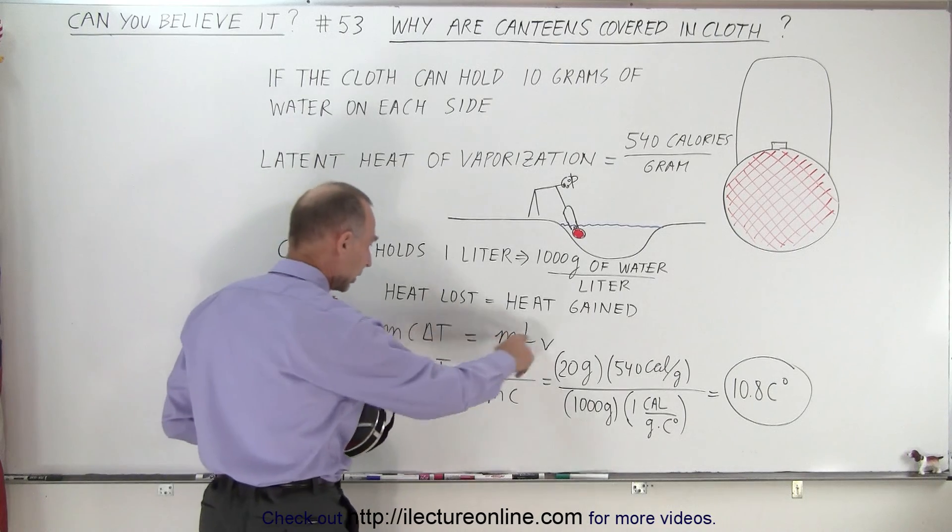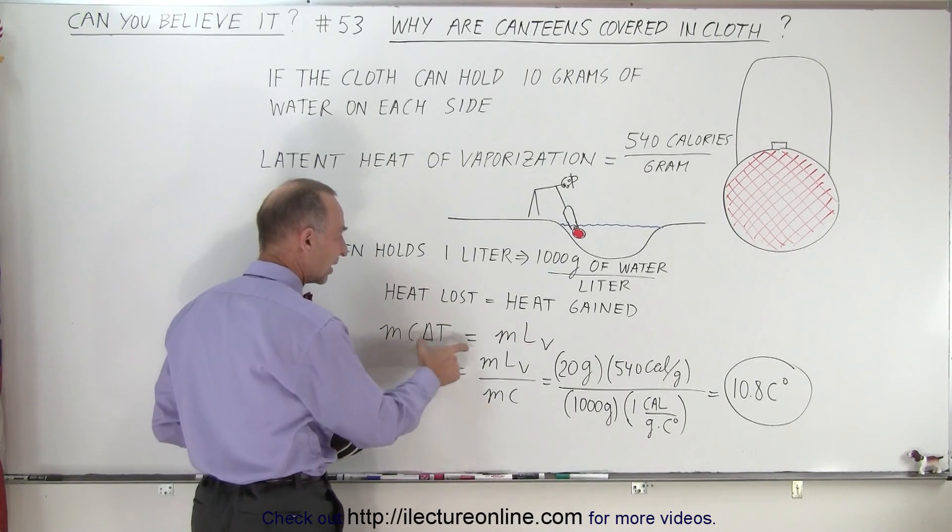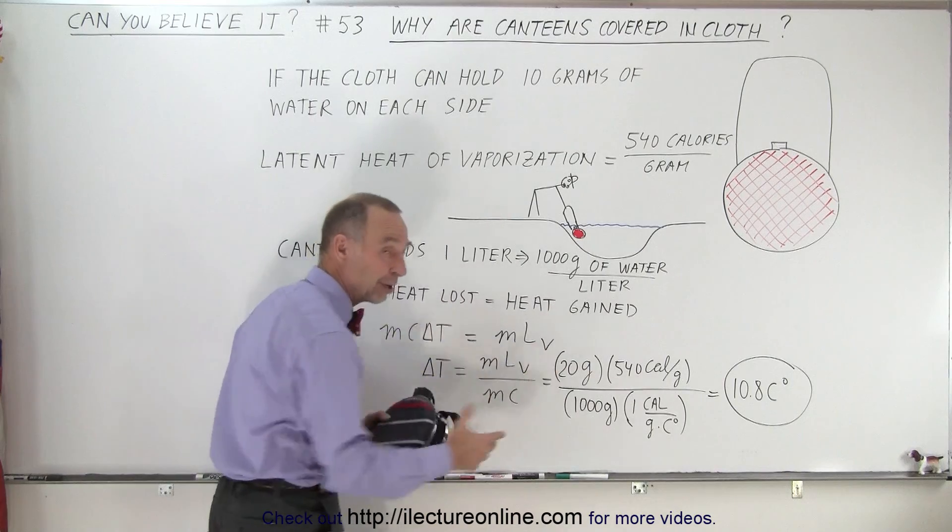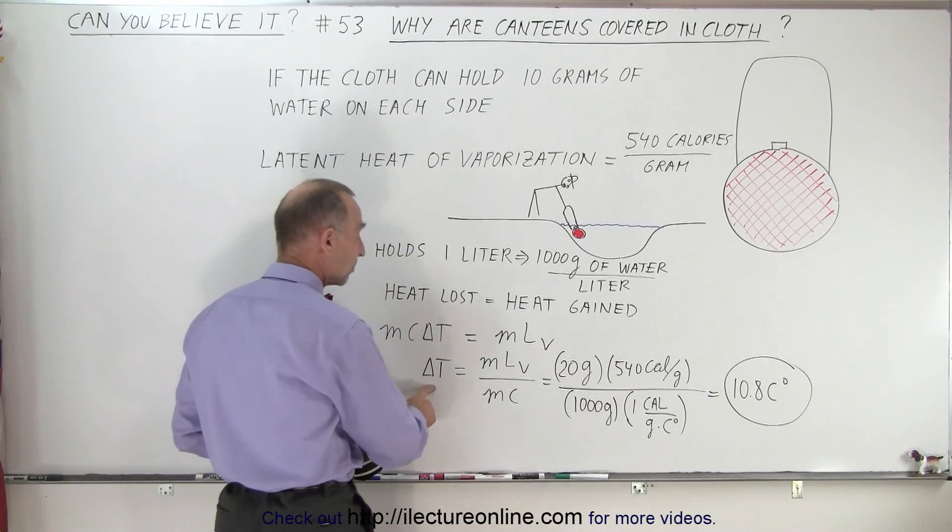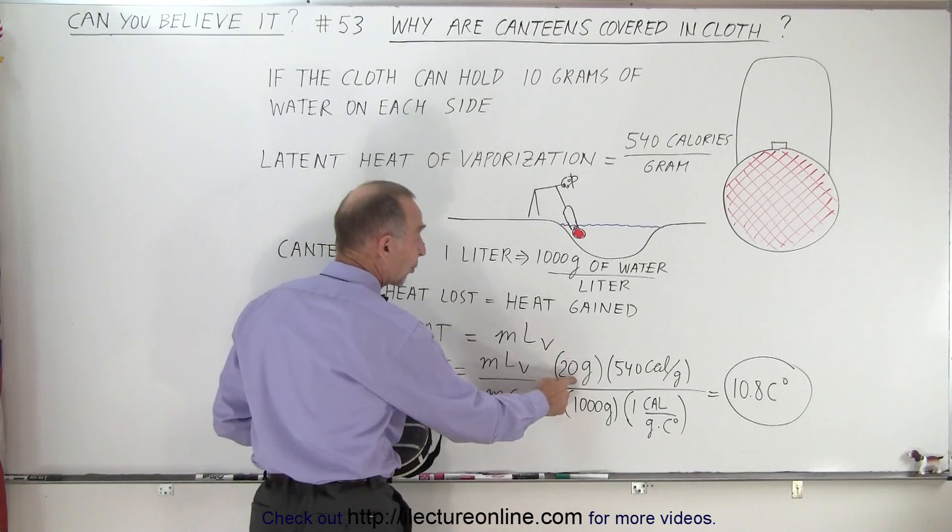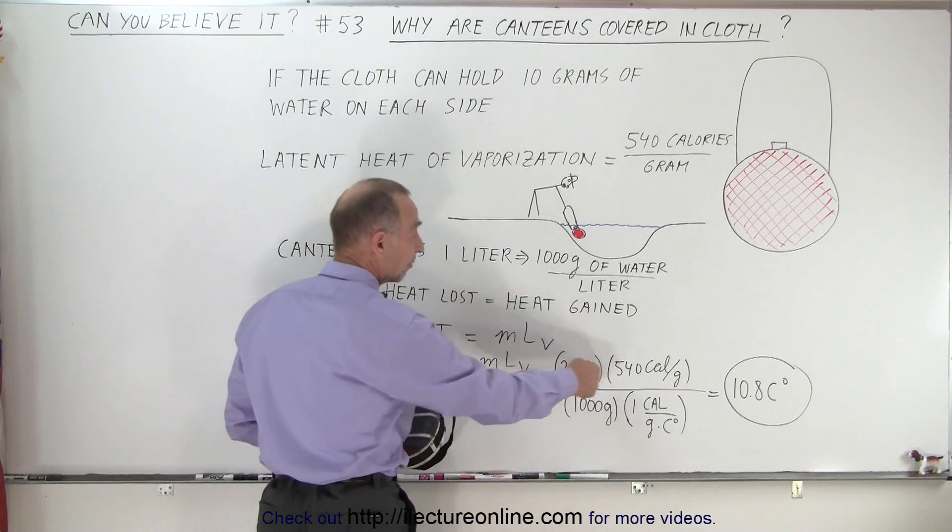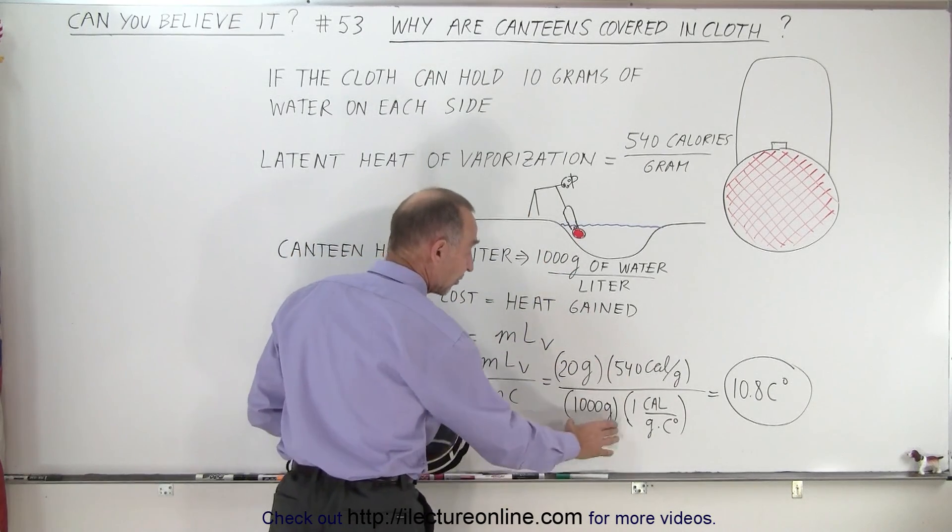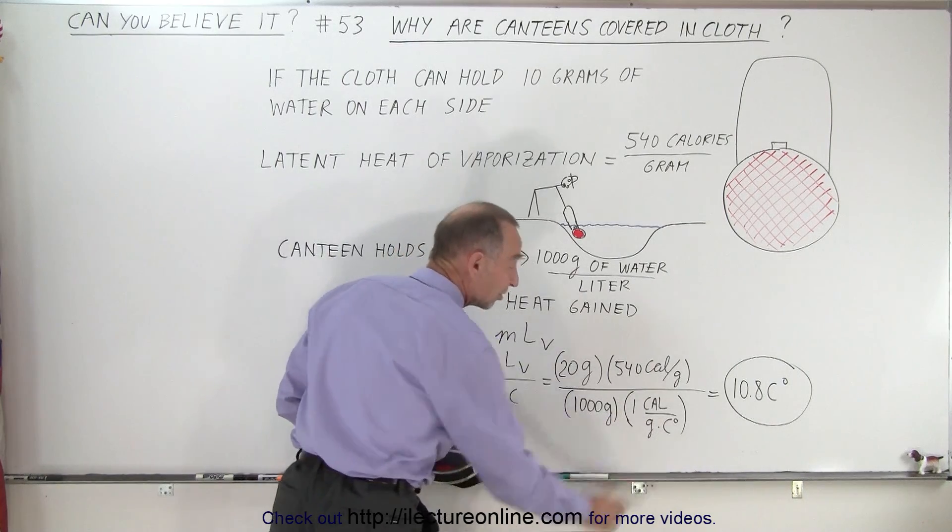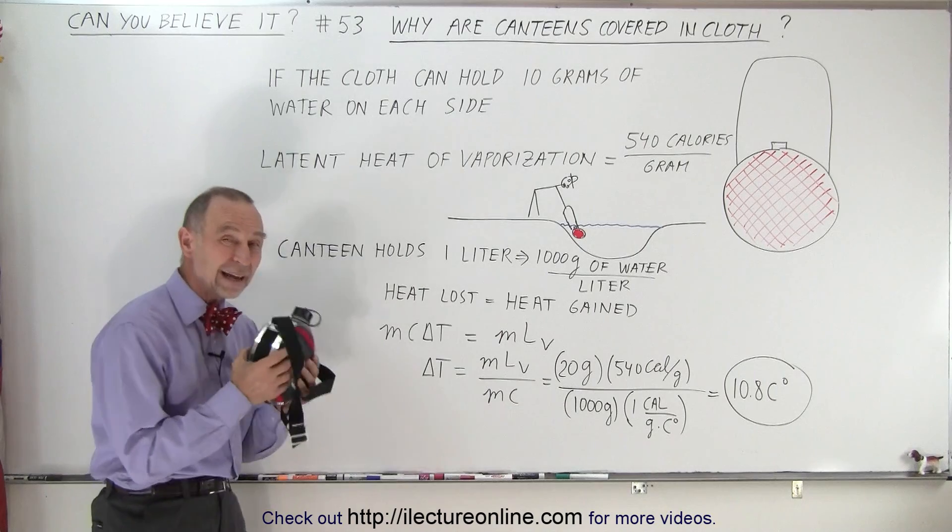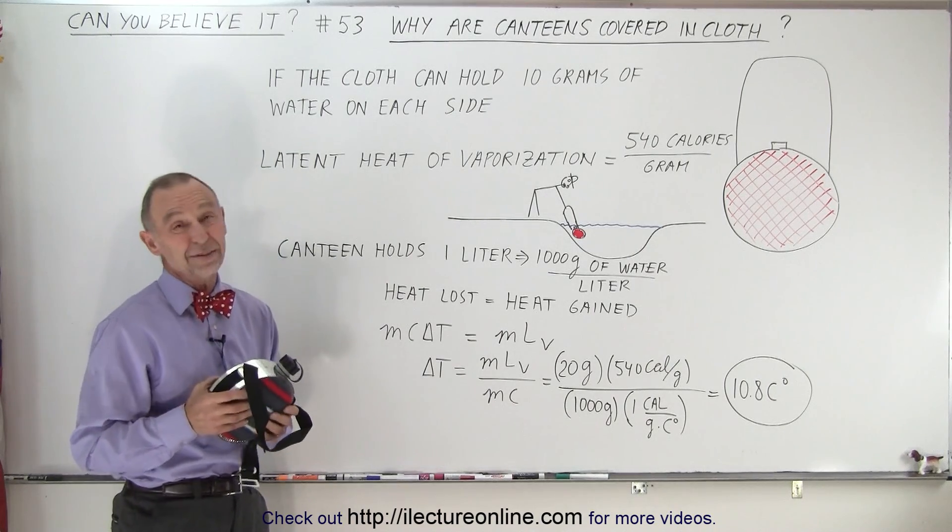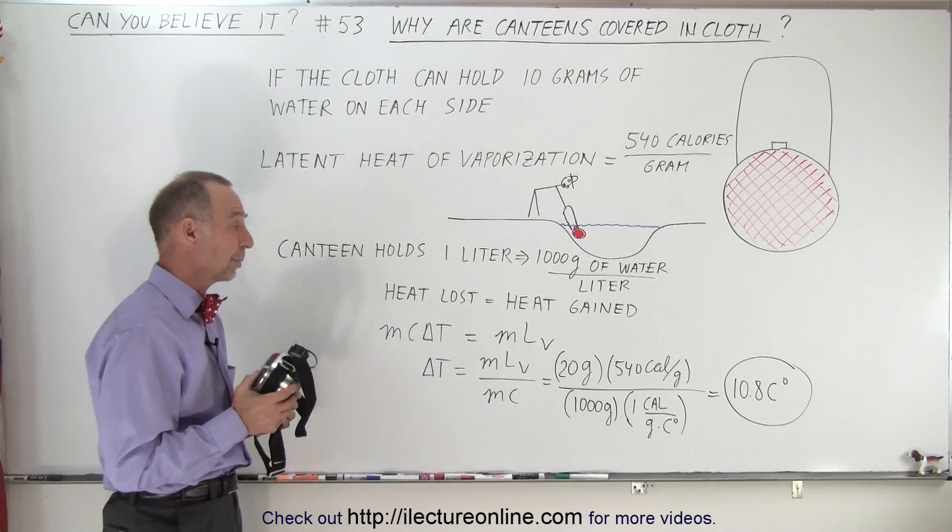So using a little equation right here, the amount of heat lost by the water inside is equal to the heat gained for the evaporation of the water on the outside. And if you solve that for the change in temperature: 20 grams of water, 10 grams on each side, 540 calories per gram, divide by 1,000 grams, and the specific heat of water, it turns out you can cool the water by almost 11 degrees Celsius, or 11 Celsius degrees is the proper way of saying it.